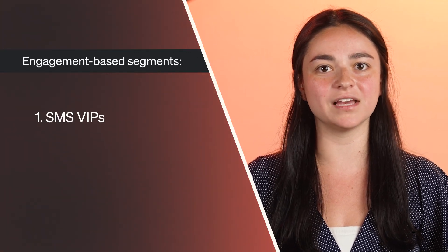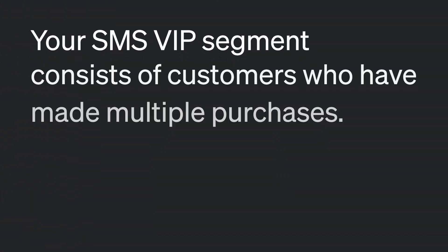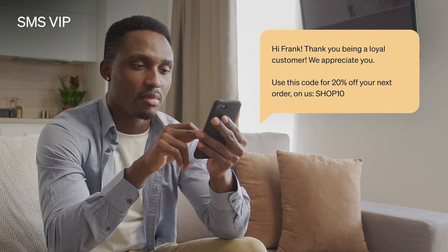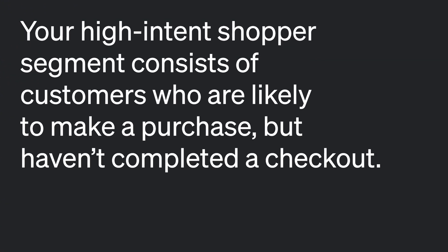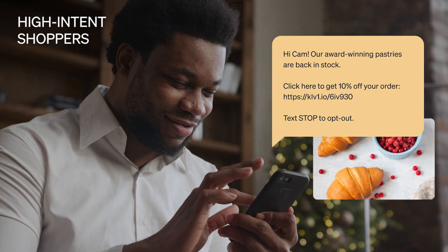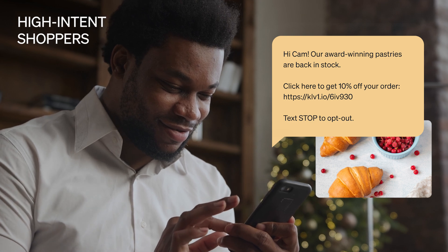We recommend you build the following behavior-based segments for targeted messages: SMS VIPs and high intent SMS shoppers. Your SMS VIPs segment consists of customers who have made multiple purchases, so thank these customers with exclusive perks and early access to new products. Your high intent shoppers segment consists of customers who are likely to make a purchase but haven't yet completed a checkout. Encourage them to convert with new product drops and incentives to complete their purchase.